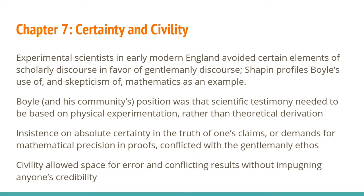Chapter 7 goes into the ways that the rules of civility allowed the community of practice to function. Shapin argues that early modern experimental scientists frowned upon theoretical derivation, preferring physical experimentation. Reporting on physical phenomena that the community member had himself observed allowed the maxims of reliable testimony to be utilized. Theoretical derivation stipulated faith in classical modes of knowledge, of which Boyle and his colleagues were skeptical.